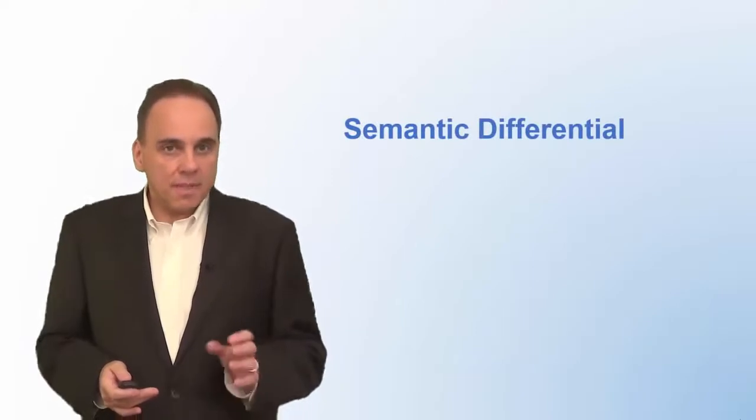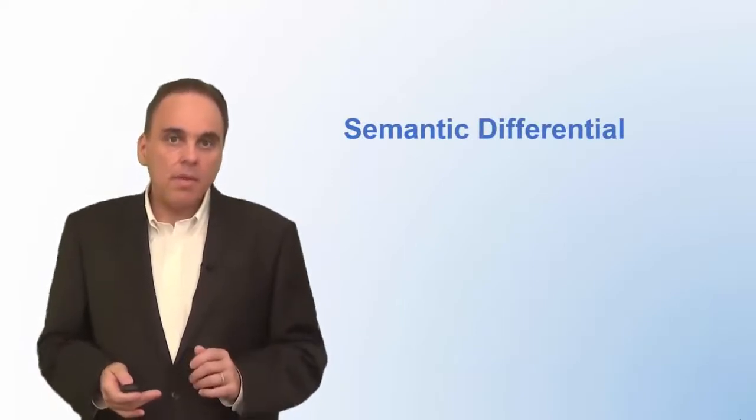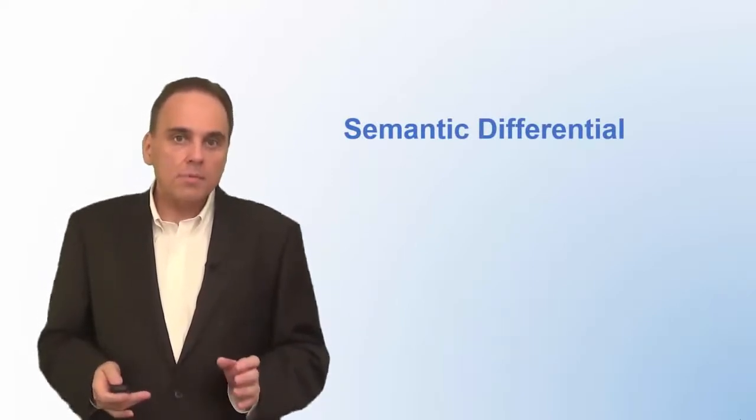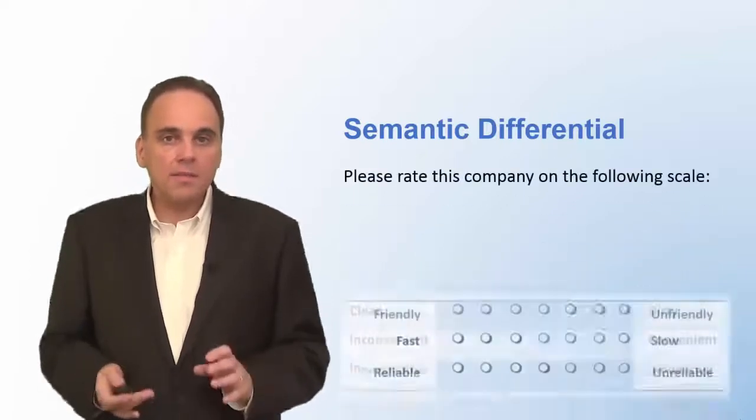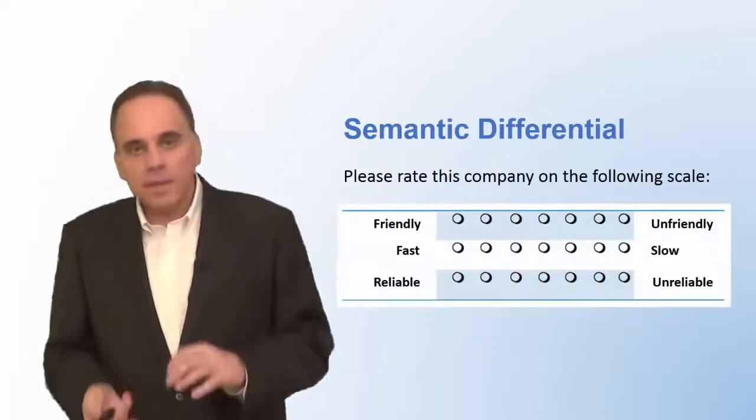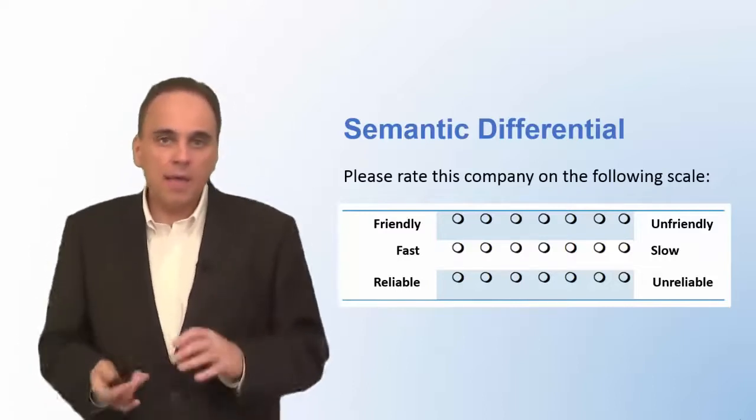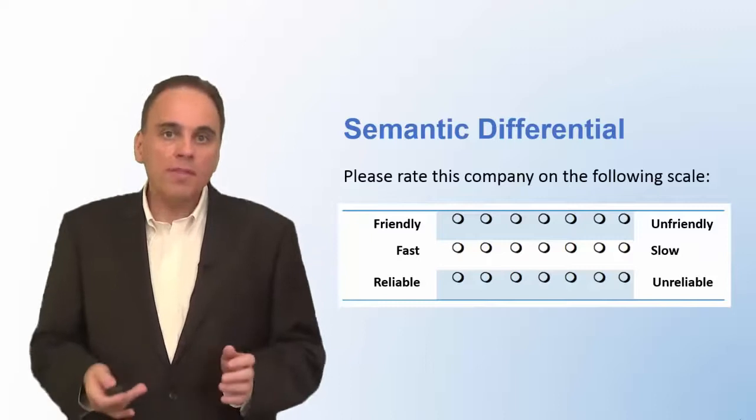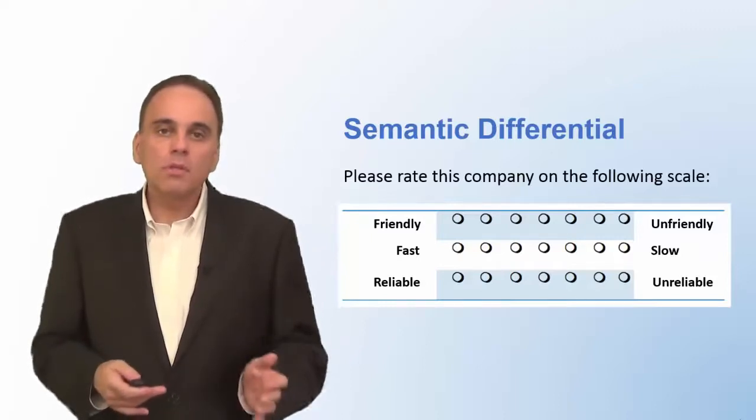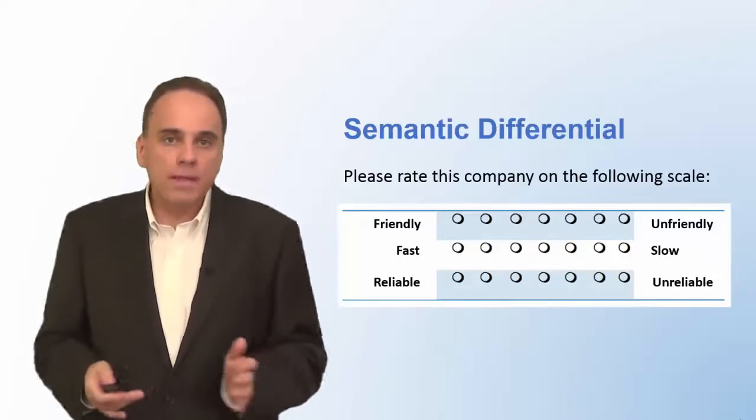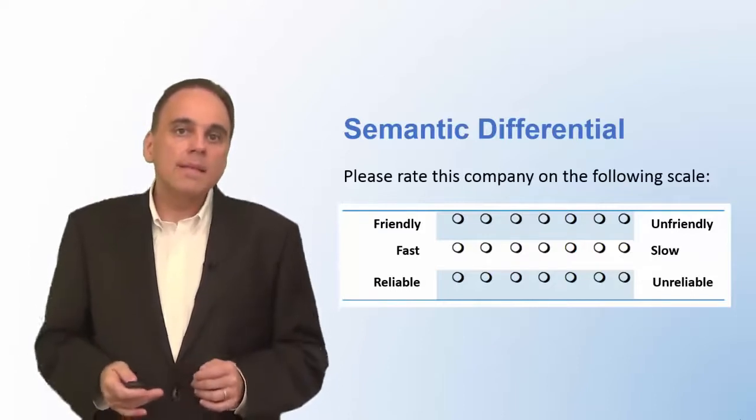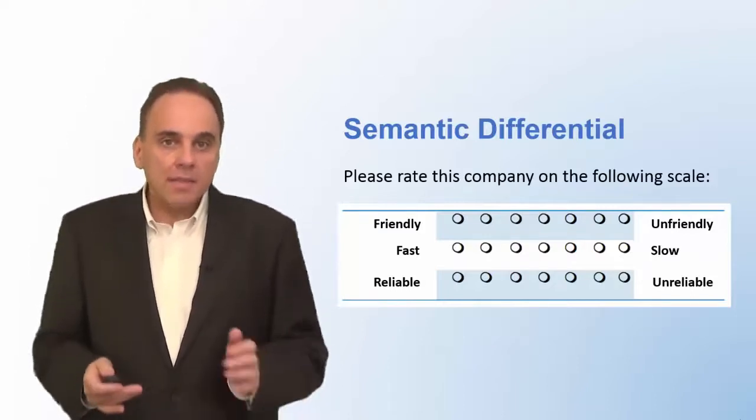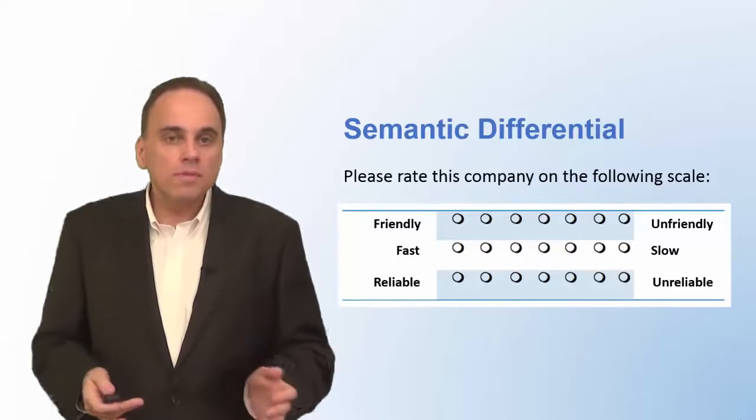Another type of scale that is frequently used is the semantic differential. You will present the respondent with opposing adjectives like friendly, unfriendly, fast, slow, reliable, unreliable, and so on. The respondents then indicate how well these adjectives describe a person, a logo, a slogan, brand, or company. A semantic differential usually has seven scale points, but you can also use a different number.